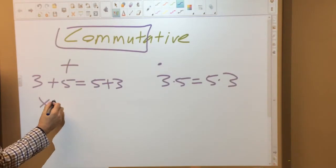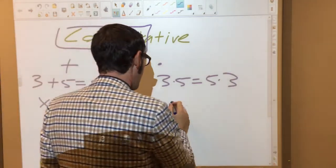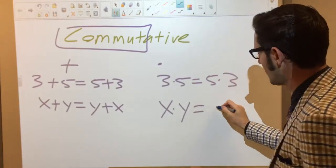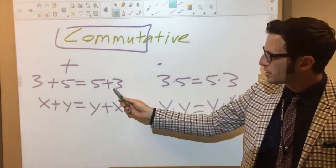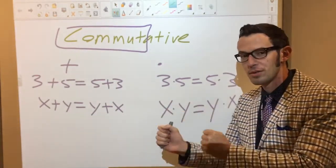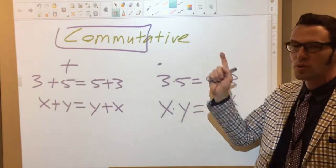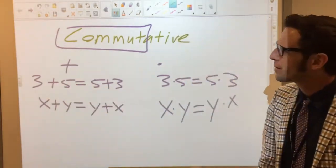And it extends to variables. x plus y is the same thing as y plus x, and x times y is the same thing as y times x. You'll notice that in each of these scenarios, the order has changed. The order flips. That's how we know that that's the commutative property. You're going back and forth or forth and back, I guess it depends on how you look at it.